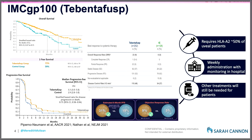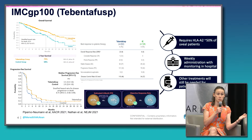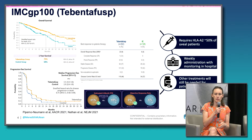TebentaFusp requires HLA-A02 status, which is only about half of patients with uveal melanoma. It's weekly treatment. TebentaFusp is becoming more available at local oncologist's offices and local hospitals, but it still requires training of the staff due to monitoring. Especially for those first three doses, patients need to be hospitalized for a 16-hour monitoring period to make sure that if patients experience fevers, chills, low blood pressure, or low oxygen levels, they're getting appropriate care — fluids, supplemental oxygen for a few hours — and then that resolves.